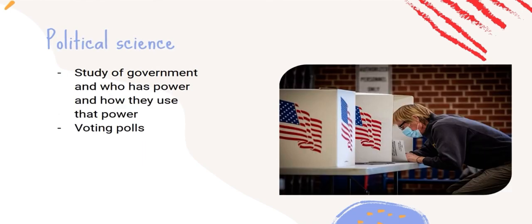Lastly, we have political science, which is the study of government and who has power and how they use their power. An example of this would be voting polls — we go and vote to elect who will be in power, and we think about how they're going to use that power, which is why we vote for those specific people.